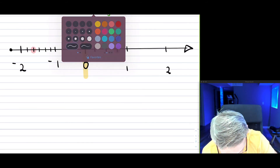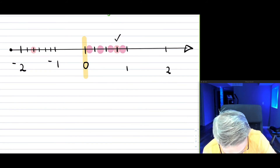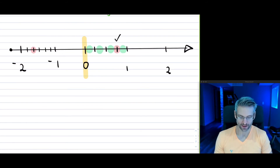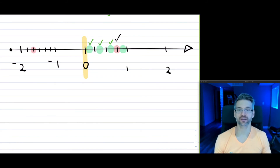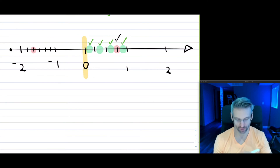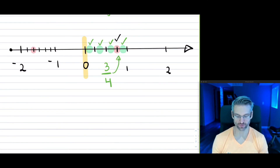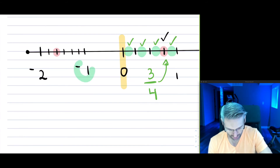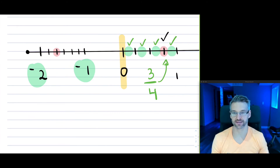To figure out the fraction between 0 and 1, I count the pieces: 1, 2, 3, and 4 pieces make up the whole. The point lands on 3 of those pieces, so out of 4 total the fraction is 3 over 4, or three quarters. That's what we do when counting in the positive direction.